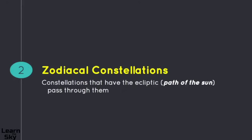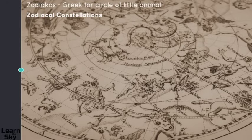Our next type of constellation is called a zodiacal constellation. These are ones in which the ecliptic, or the path of the sun, passes through them. If we break down this word a little bit more, zodiacos is Greek for circle of little animals.